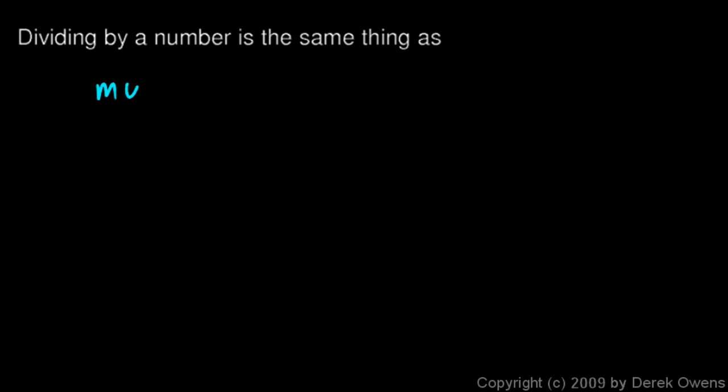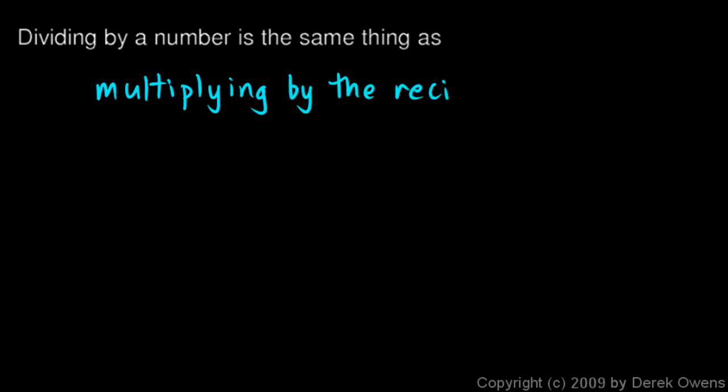Now we'll talk about division with real numbers, and I'll go straight to the main point. Dividing by a number is the same thing as multiplying by the reciprocal of that number. Write this into your notes.